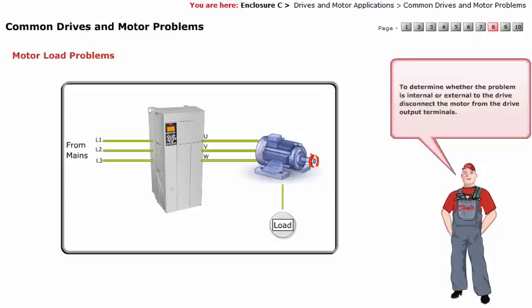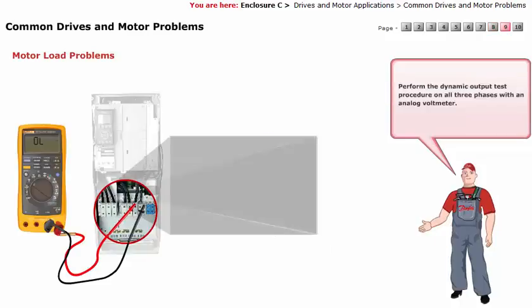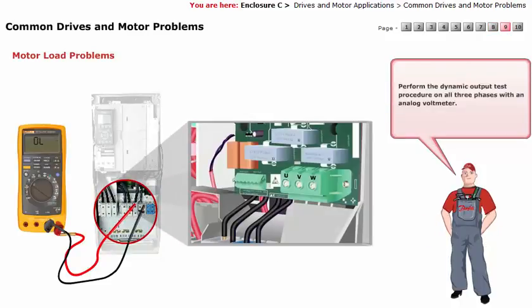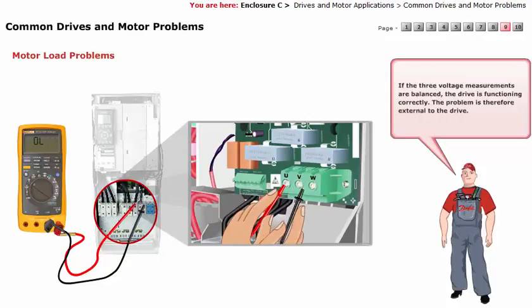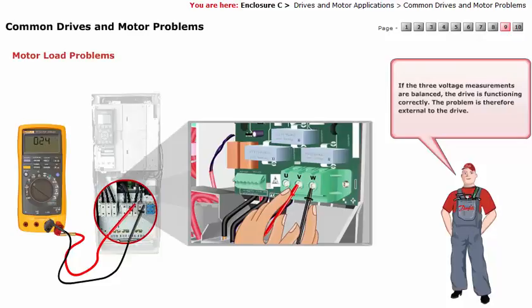To determine whether the problem is internal or external to the drive, disconnect the motor from the drive output terminals. Perform the dynamic output test procedure on all three phases with an analog voltmeter. If the three voltage measurements are balanced, the drive is functioning correctly, and the problem is therefore external to the drive.